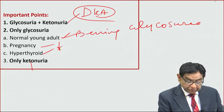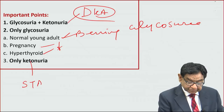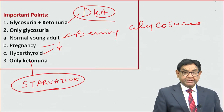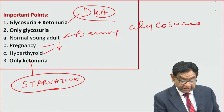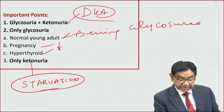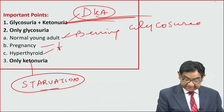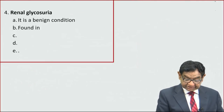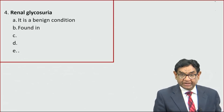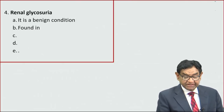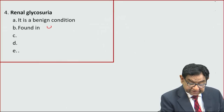Only ketonuria is seen in prolonged starvation. Remember: ketonuria and glycosuria together are seen only in DKA or diabetes — no other disease has this combination. Renal glycosuria, discussed in the previous slide, is a benign condition found in young adults.